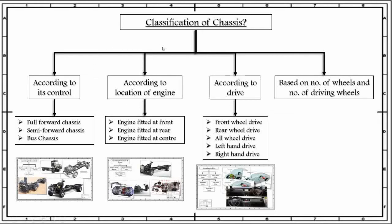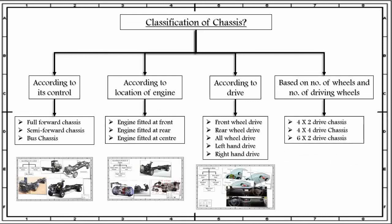The last classification of chassis is based on number of wheels and number of driving wheels. The chassis can be classified as 4x2 drive chassis, where the number of wheels is 4 and power is given to 2 wheels, so there are 2 driving wheels. In 4x4 drive chassis, there are 4 wheels and power is given to all 4 wheels. The third category is 6x2, where the vehicle has 6 wheels but power that drives the vehicle is given to only 2 wheels.